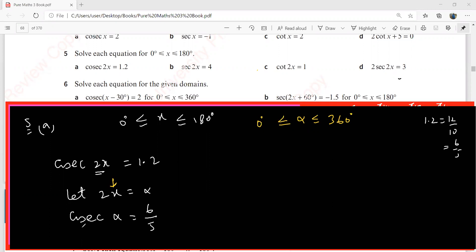Cosecant alpha was 6 over 5, so sine alpha is 5 over 6. Sine is positive in these two quadrants. Tell me quickly, what is sine inverse of 5 over 6? Yes, 56.4. That is 56.4 here and 56.4 here as well.